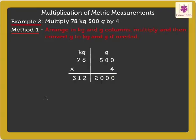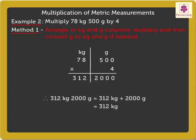Now, on converting 312 kilograms 2000 grams, we get 312 kilograms plus 2000 grams, which is equal to 312 kilograms plus 2 kilograms, which is equal to 314 kilograms.